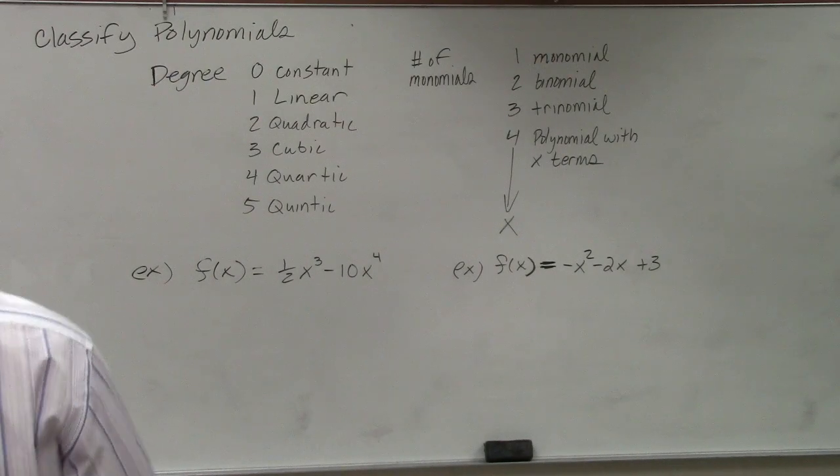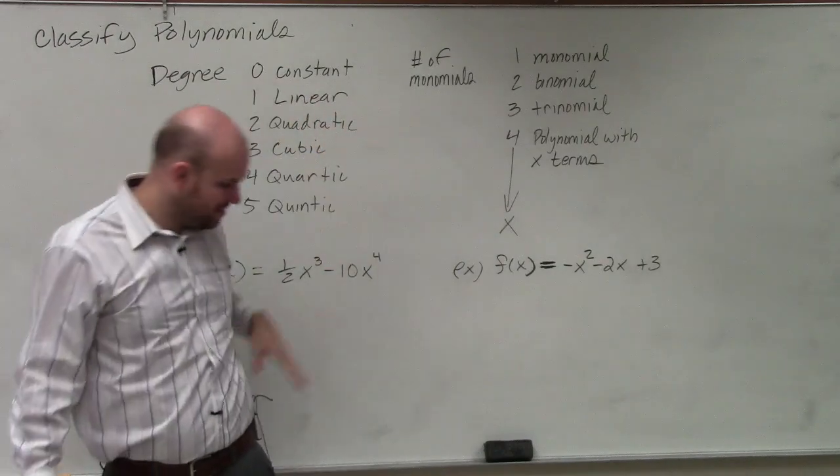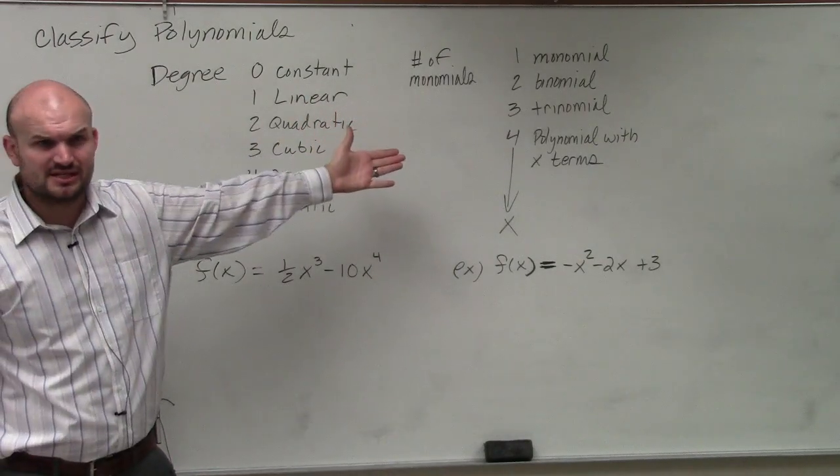If I want to classify this using the degree and the number of monomials, the main important thing is I want to make sure this is in descending form.